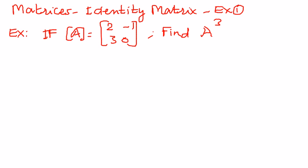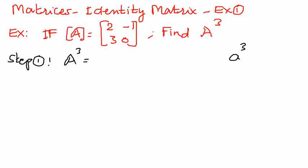The way to do that is as follows. Step 1: A to the power of 3, very similar to what we have seen in algebra, means A times A times A. We can also write this as A to the power of 2 times A.